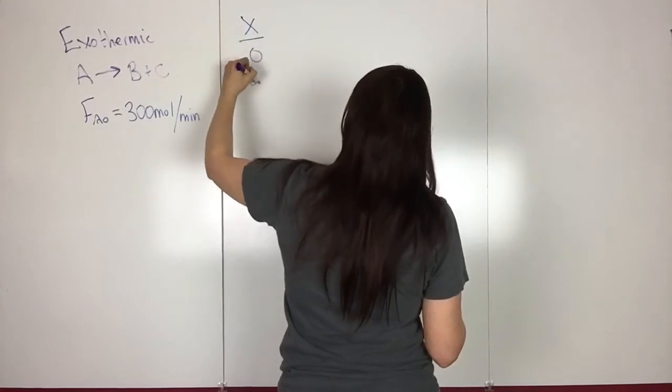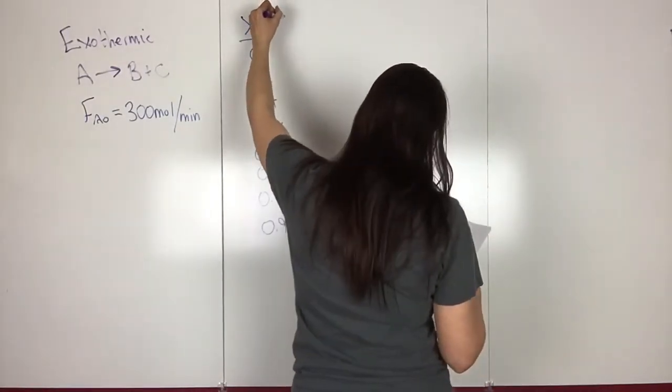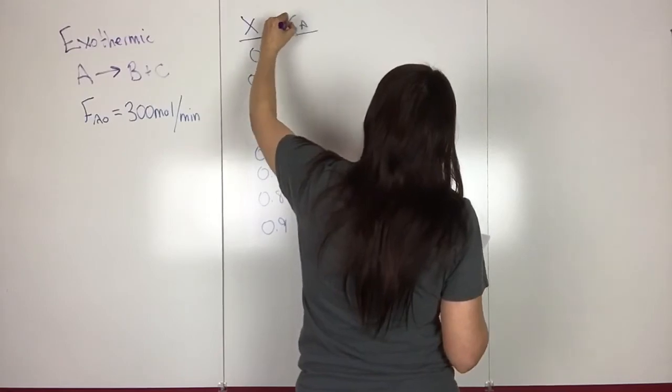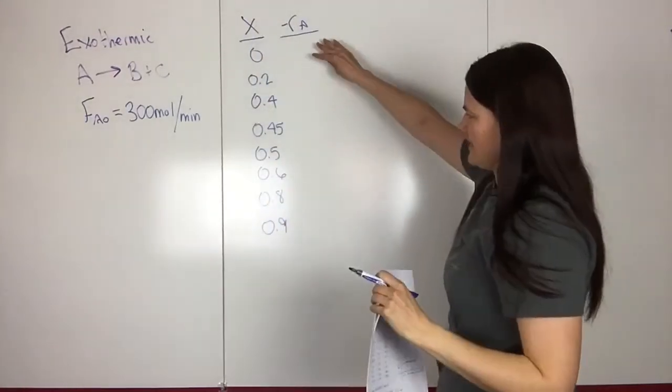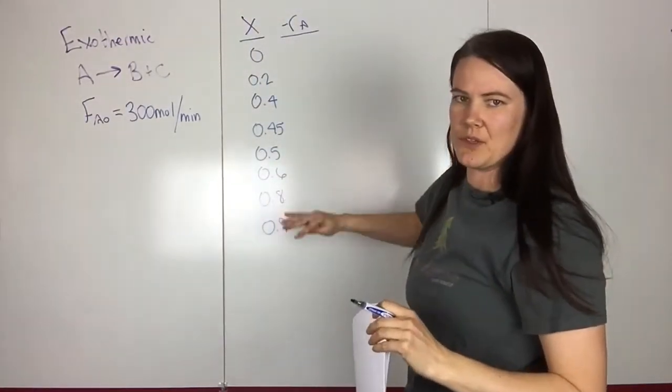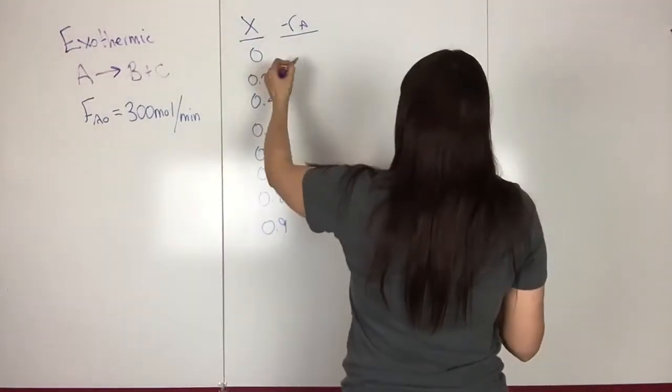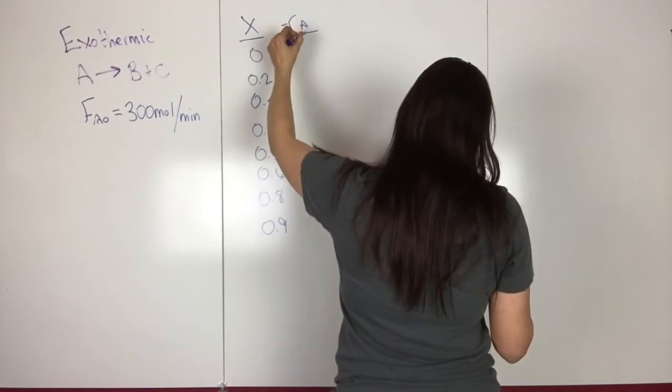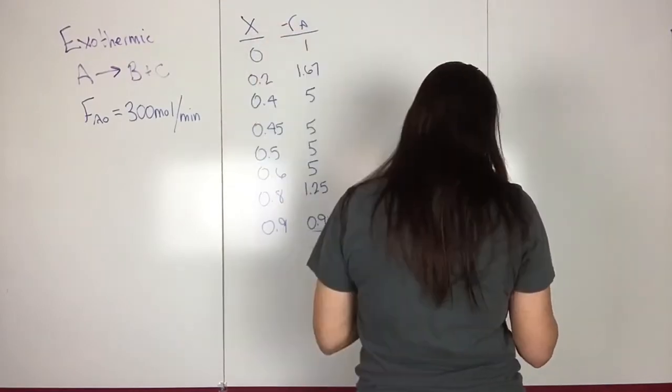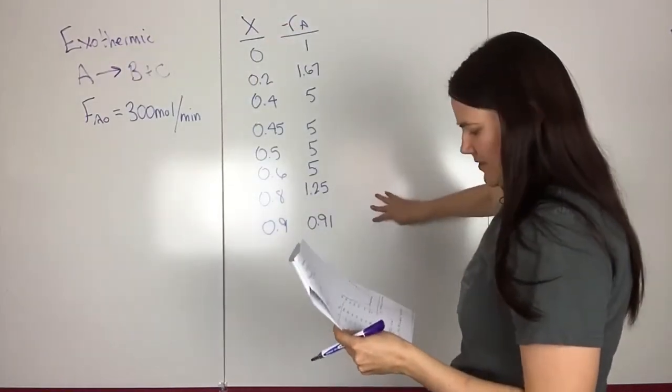FA0 is equal to 300 moles per minute. And then it gives you the following data, X. So 0, 0.1, 0.2, 0.3, 0.4, 0.5, 0.6, 0.7, 0.8. These are the conversions. And then, so this would be what you would have if you were running an experiment and measuring data. So then for the rates for each of these conversions, you had 1, 1.67, 2, 2, 1.5, 1.25, 1, 0.91, 0.5, 0.25. So this is the data it gave you.